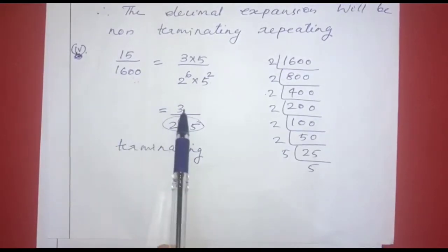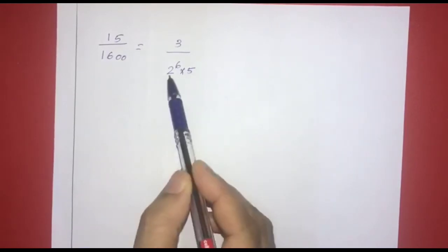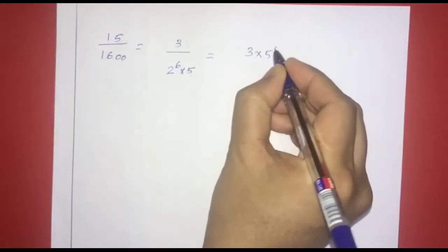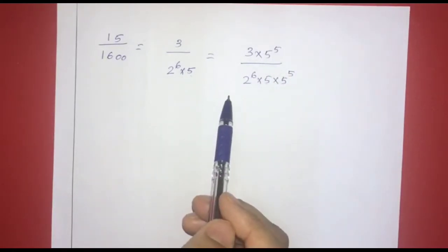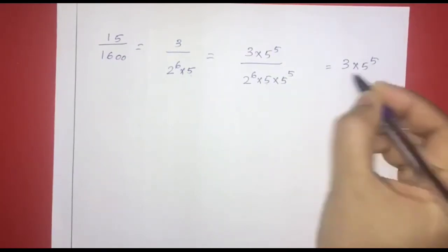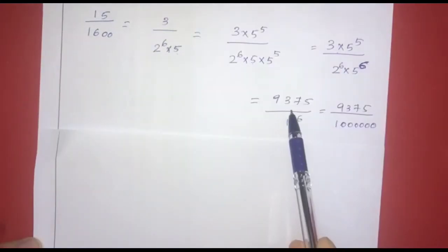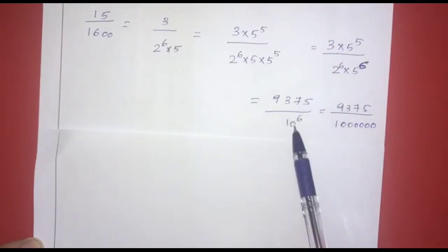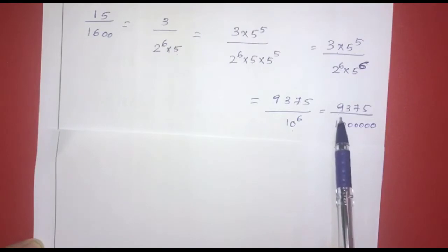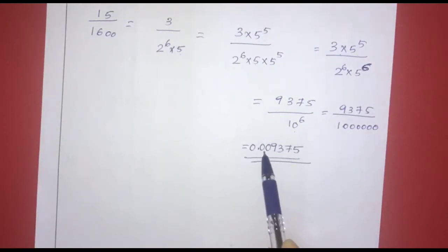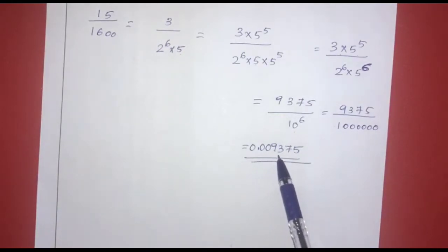For 15 by 1600, we found it simplifies to 3 by 2 raised to 6 into 5. We multiply numerator and denominator by 5 raised to 5. That gives 3 into 5 raised to 5 divided by 2 raised to 6 into 5 raised to 6, which equals 9375 divided by 10 raised to 6. Placing the decimal 6 places from the right, the decimal expansion is 0.009375.